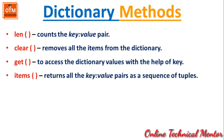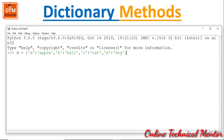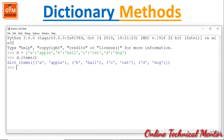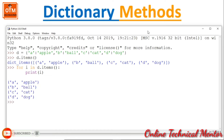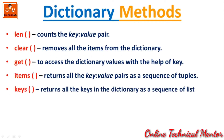Next, the items() function. It returns all the key-value pairs as a sequence of tuples — it extracts each pair from the dictionary and converts it into a tuple. If I write D.items(), it returns all pairs as individual tuple elements. Using a for loop: 'for i in D.items(): print(i)' displays all tuples on separate lines.